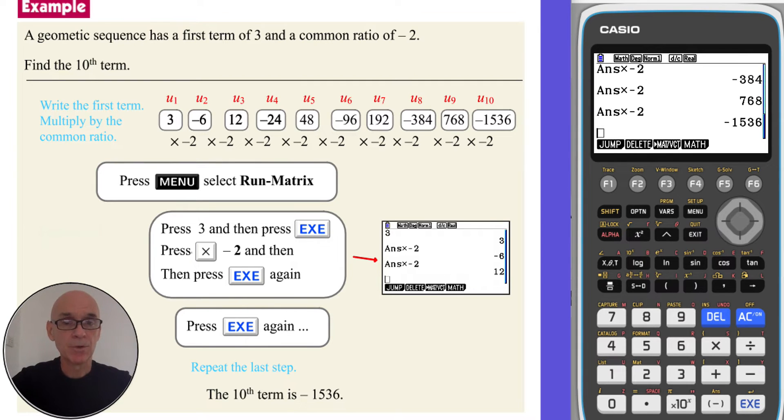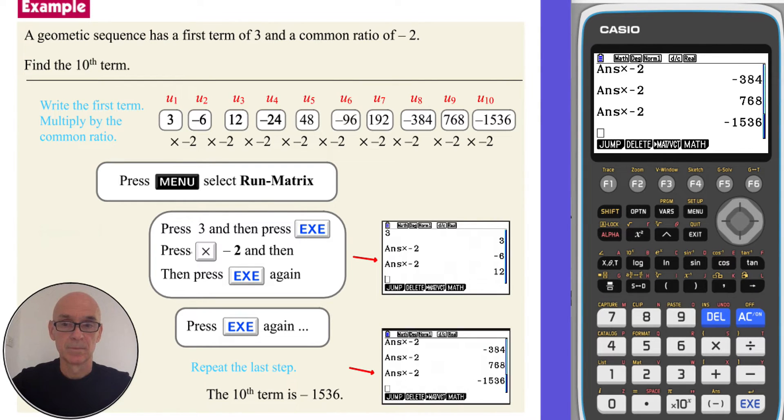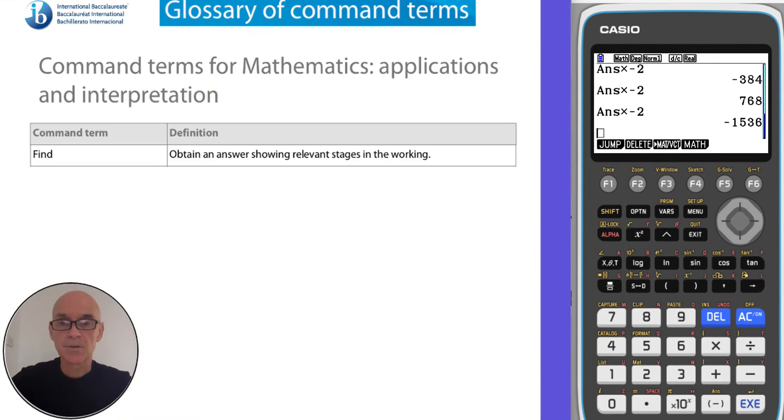So as before the tenth term is negative 1,536. In that question we're asked to find the tenth term, and if we look up the definition of find in our glossary of terms we see it says to obtain an answer showing relevant stages of working. Of course relevant stages of working could be writing down the terms, but that wouldn't be an appropriate method if we had to work out the hundredth or the five hundredth term.